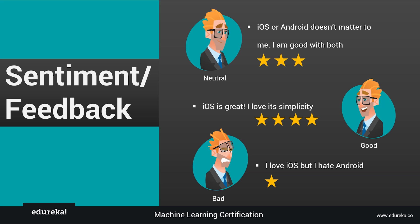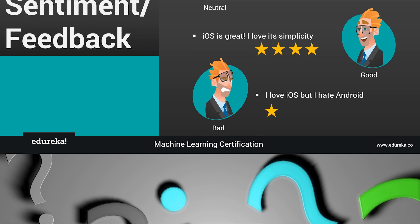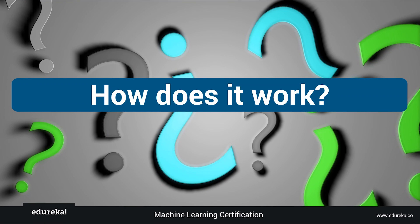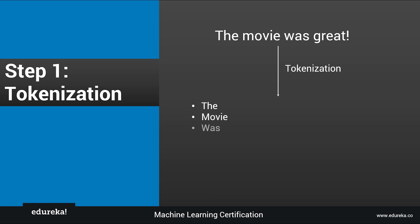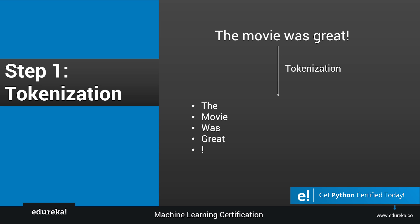Now that you know what sentiment analysis is, let's move on and see how it actually works. Let's take the statement 'The movie was great' as an example. The very first step is tokenization. Tokenization is nothing but dividing a paragraph into different statements, or dividing a statement into different words. So the statement 'The movie was great' would be further segregated into its individual words.